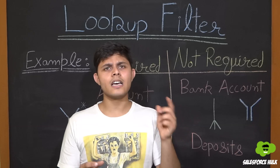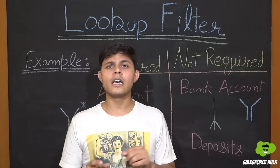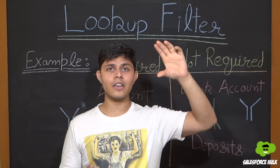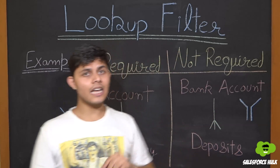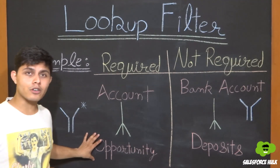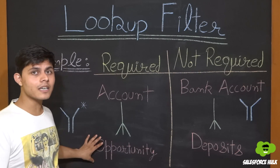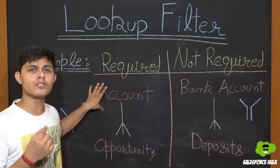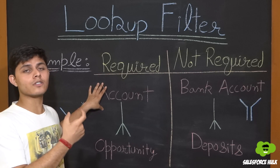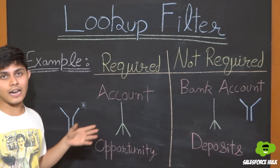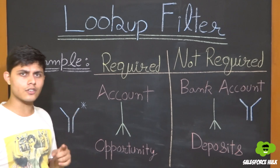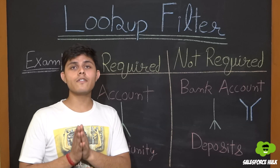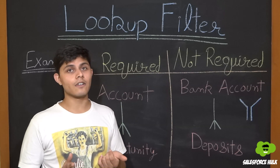There is a checkbox field which says whether it is active or not. If it is selected, only that account record should be available to relate with Opportunity. New opportunities will be created for active account records only, not for account records that do not have that active checkbox checked. So we'll set the lookup filter and make it required because we only want opportunities on active accounts, not on inactive accounts.